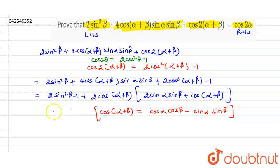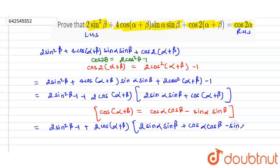Using this formula, we write 2sin²β - 1 + 2cos(α+β)[2sinαsinβ + cosαcosβ - sinαsinβ].